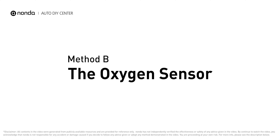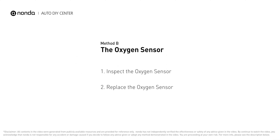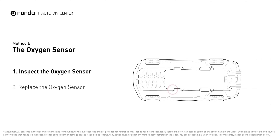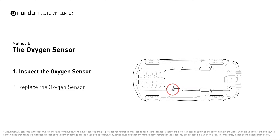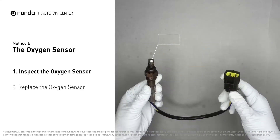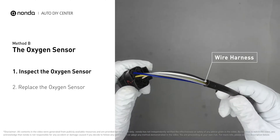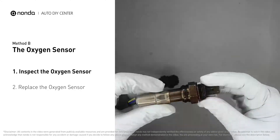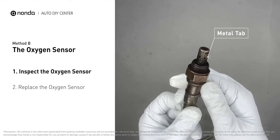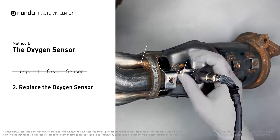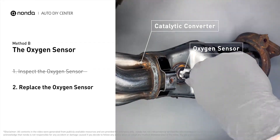Method B: The Oxygen Sensor. This oxygen sensor is located right before the catalytic converter. Bank 2 is on the side with cylinder number 2, and sensor number 1 is usually the one in the exhaust manifold. Visually check the oxygen sensor's electrical connections, wire harness, and metal tabs for any damages. If damages are found, replace the oxygen sensor.